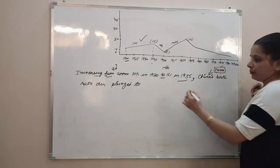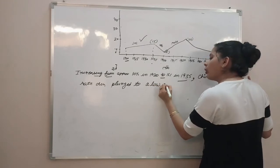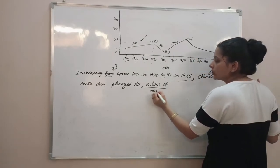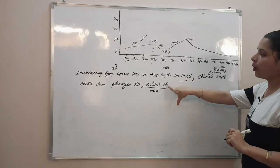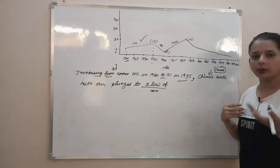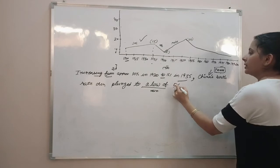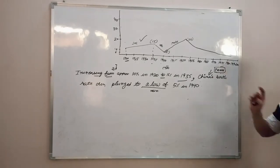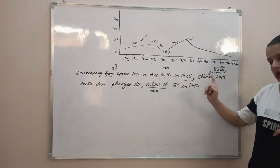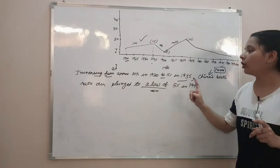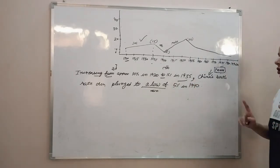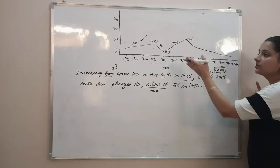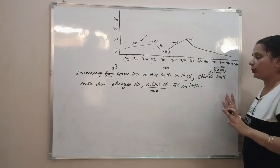After 'plunged' we write 'to a low of' — remember this phrase. We use 'a low of' when we are indicating the minimum point. Since this is the lowest value, we write 'plunged to a low of 5% in 1940.' The sentence is complete here. In one sentence I have told two things: the increase from 10 to 15, and then China's birth rate fell to a minimum of 5.